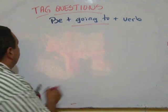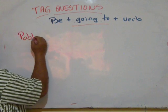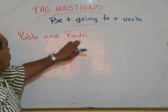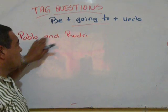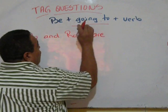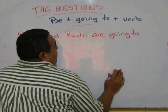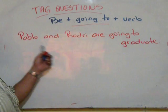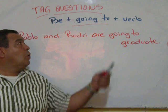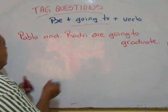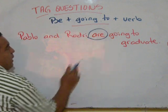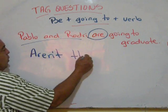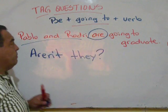For example, Pablo and Brody. Now, Pablo and Brody, which form of be? Because there are two, we have to use are. Going to graduate. Pablo and Brody are going to graduate. The tag question will have to go in a negative expression. And it has to begin with be. In a negative, aren't they? Because there are more than one people, aren't they?